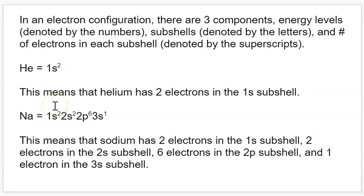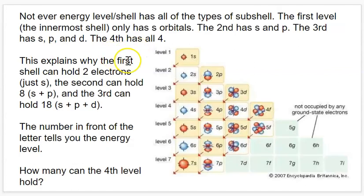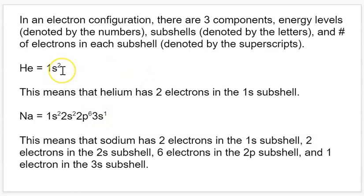Say we want to write the code for helium. Helium only has two electrons, so it's just going to have two electrons in its first energy shell. The first energy shell only has S subshells available to it. So we're going to have 1S — the first energy level's available subshell — and it's going to have two electrons. So we write it as 1S2. The 1S2 is basically code for saying that helium has two electrons in its 1S subshell.